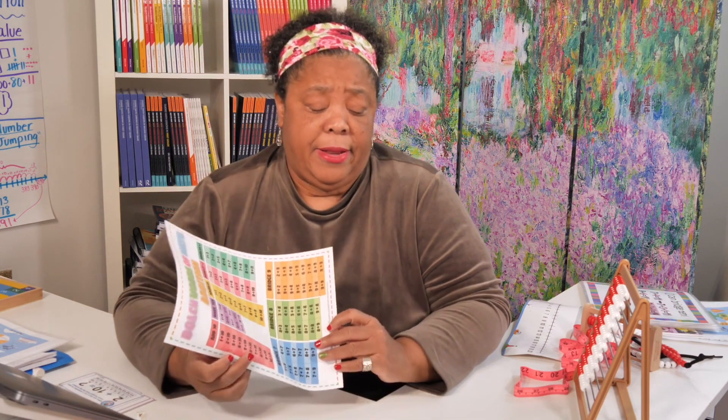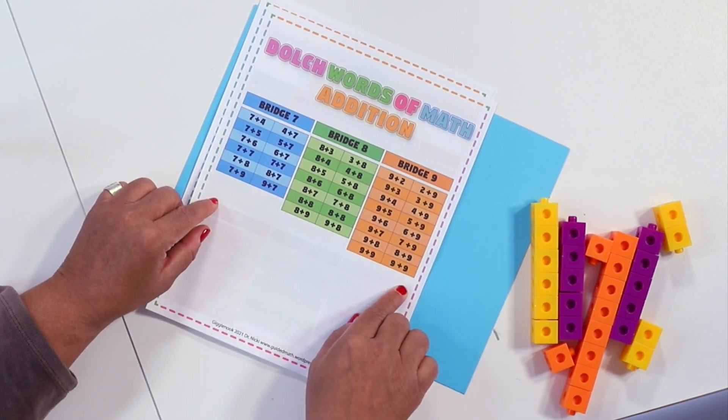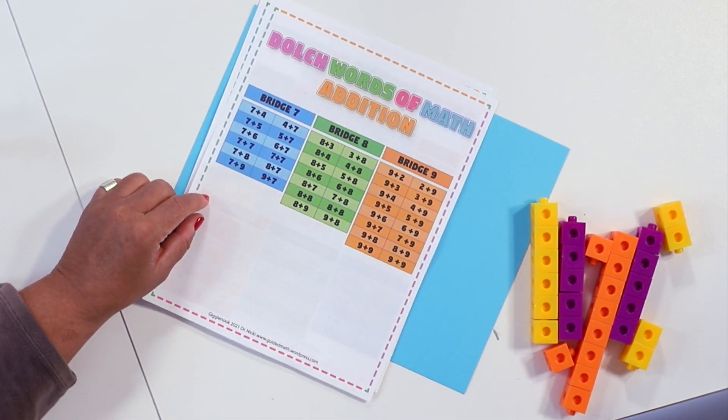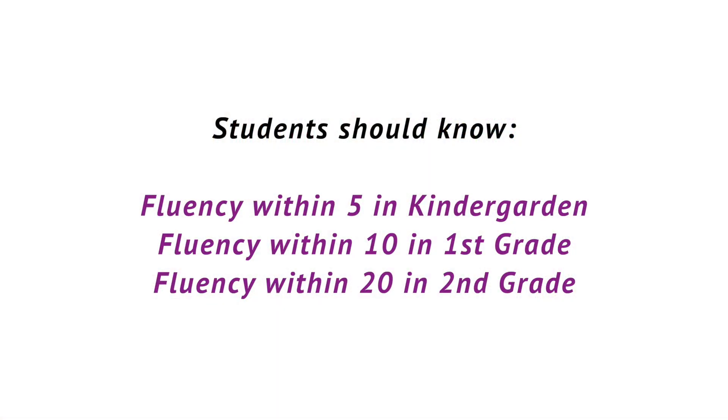And then bridging seven, bridging eight, and bridging nine. The thing I want to say about bridging is it's really something you want kids to have full understanding of by second grade. Remember, the fluency in first grade is adding and subtracting within 10. Although you're exploring other facts, what you want kids to come away knowing without a doubt is fluency within five in kinder, fluency within 10 in first grade, and fluency within 20 in second. That's the standard for most states.